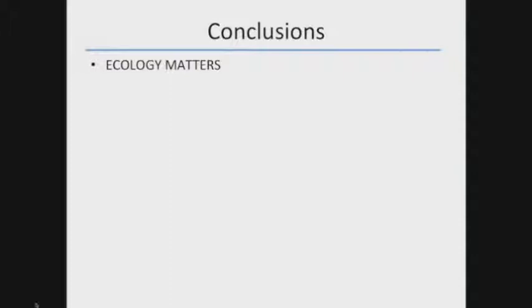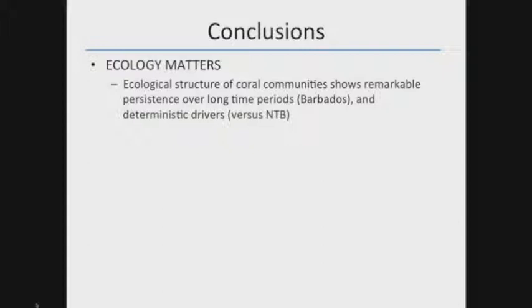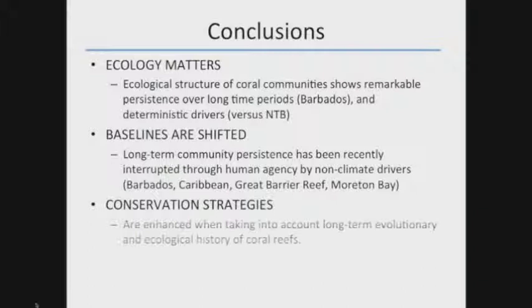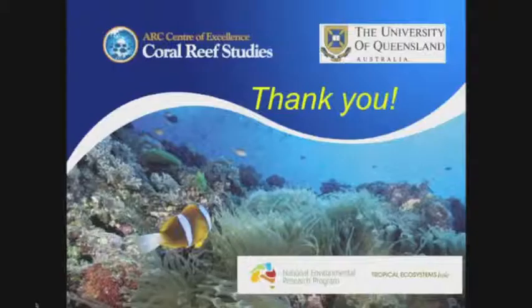Conclusions are the same as I started: ecology matters. The ecological structure of coral communities was shown to be remarkably persistent — not due to random or demographic stochasticity. This is good information when trying to interpret how our baselines have been shifted, how our environments have been degraded, and the interruption of this long-term persistence in many places around the world. Conservation strategies will be enhanced when we take into account this longer-term view of coral reefs and other ecosystems.